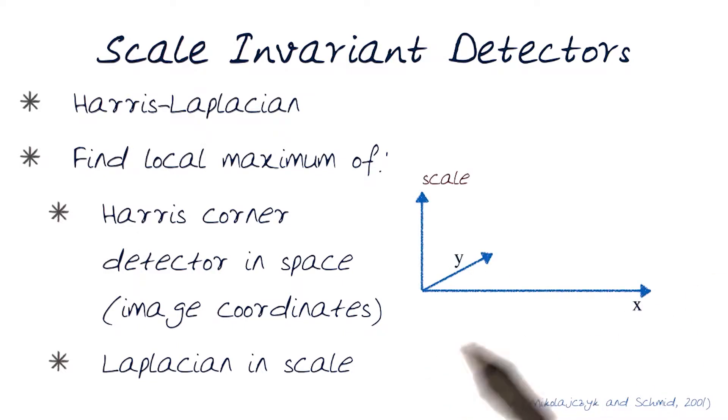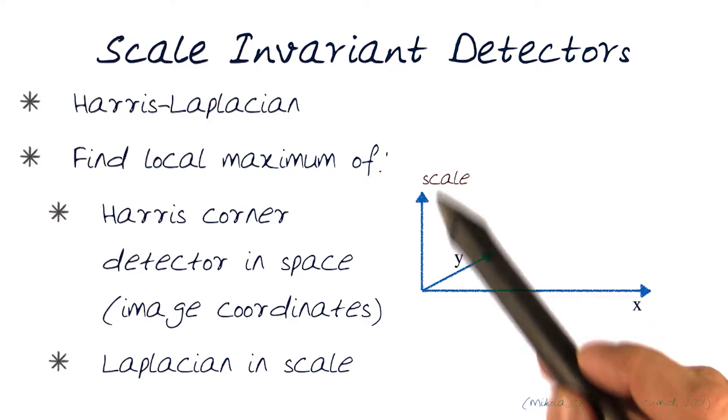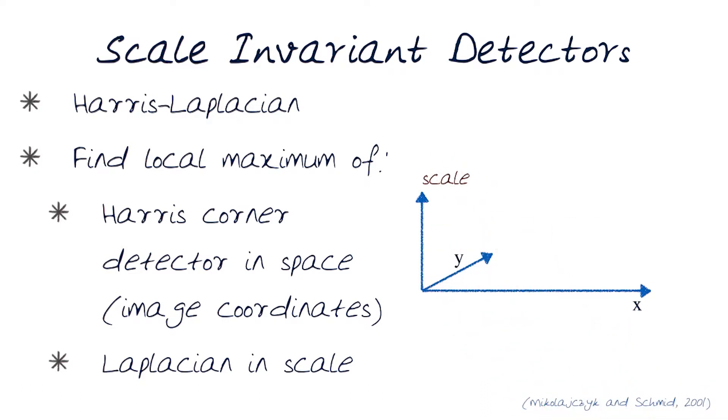So here is the best way to visually see it. Scale is shown up this way. Space is x-y, that's where the images are. Scale basically captures the frequency in the octaves. First, what I do is I run a corner detector in space, in the image coordinates.